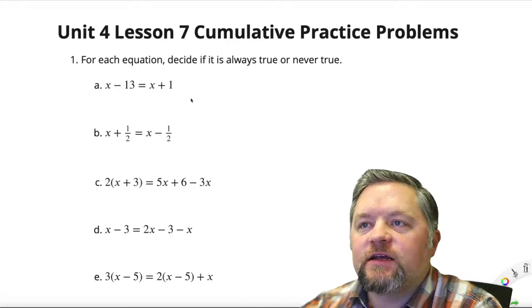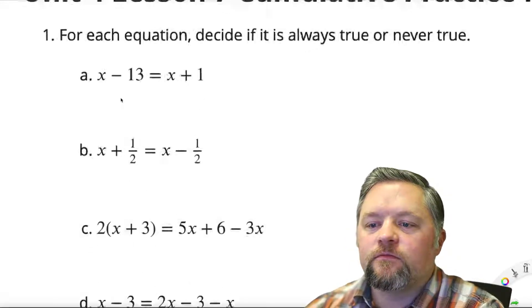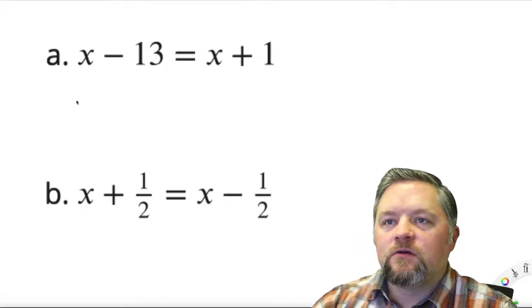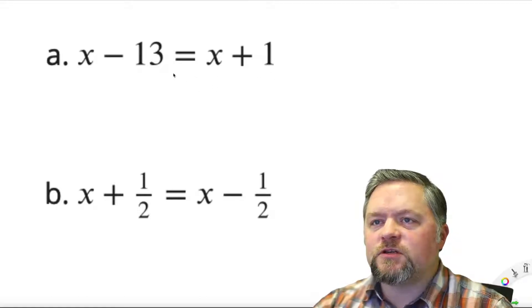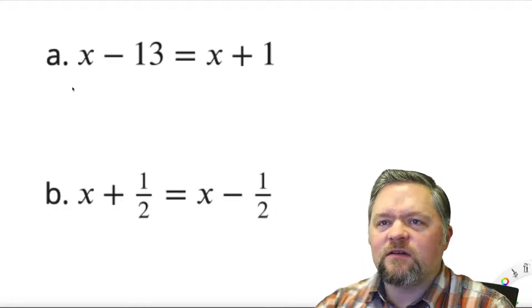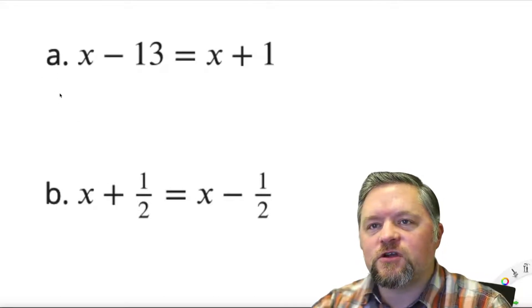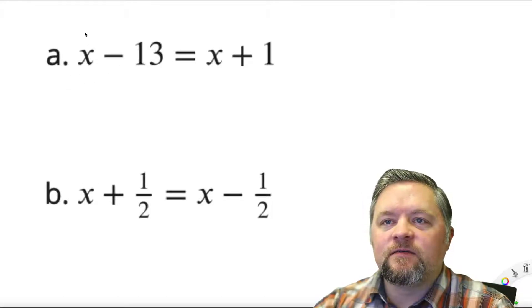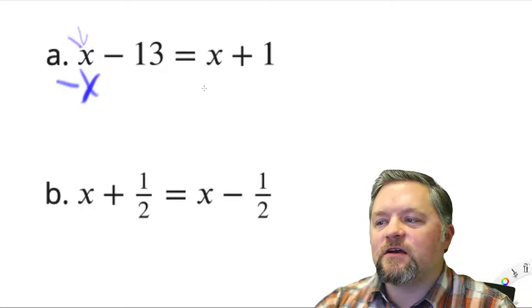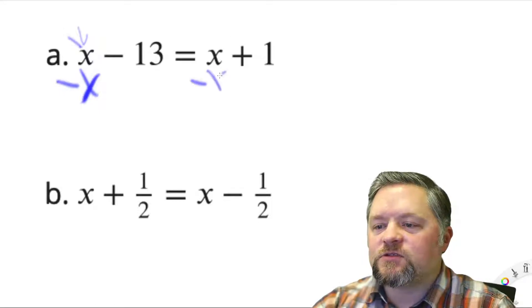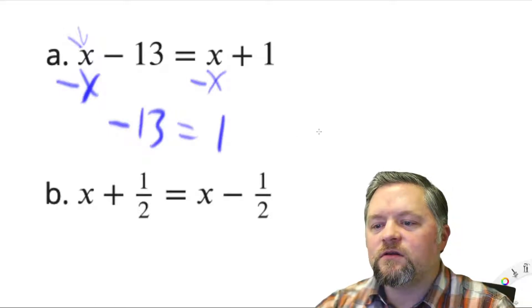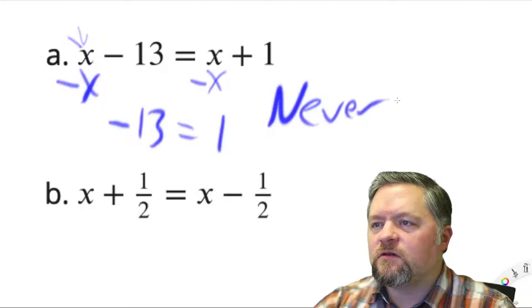First question here, decide if it's always true or never true. x subtract 13 equals x plus 1. Can you have a number, take 13 away from it, and have it be the same thing as that number plus 1? I don't think that's going to work. Let's check this out by trying to solve this. To solve it, I'd have to get all the x's on one side. So let's subtract x from both sides. Then I'm left with negative 13 equals 1. Does negative 13 equal 1? I don't think so. So that's never going to be true.